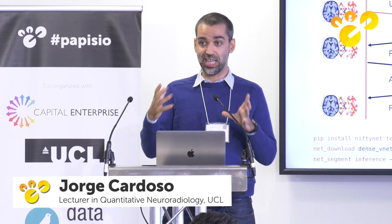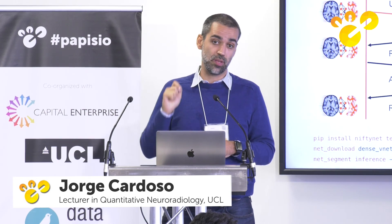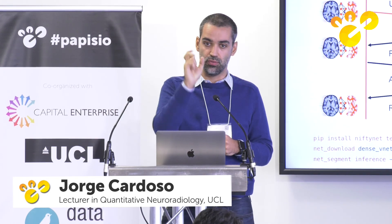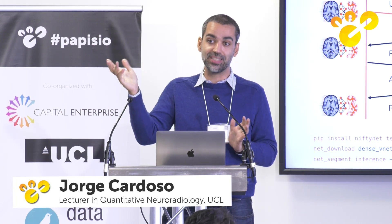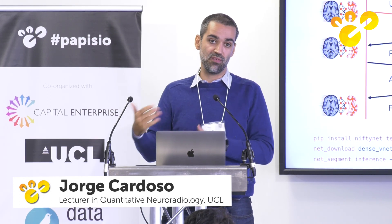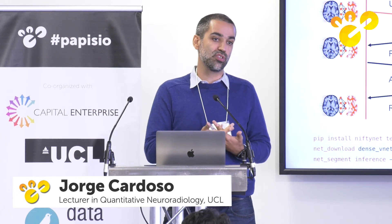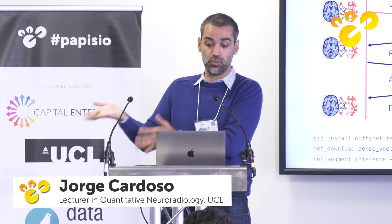We also created a model zoo interface and protocol so you can take the models you train and push them online, making it really easy for other people to use those models. You can start running NiftyNet with three lines of command: pip install NiftyNet, download the model with one single command, then say run inference with the file names and configuration file — that's it. In three lines you have a full installation and a working version solving your problem. Because the system knows how to handle images appropriately, you do not need to pre-process the data in any way.